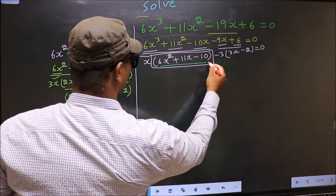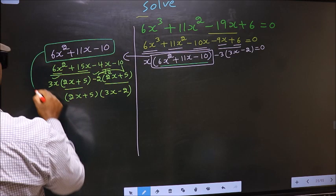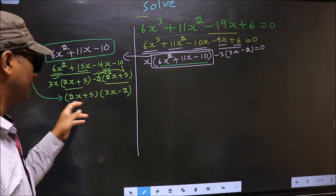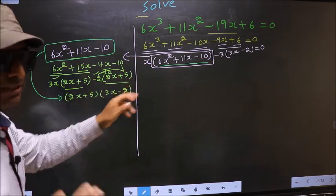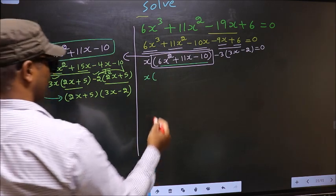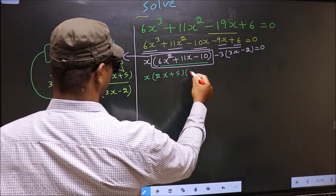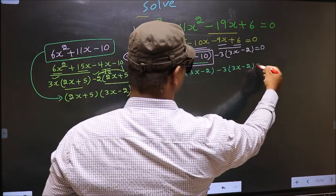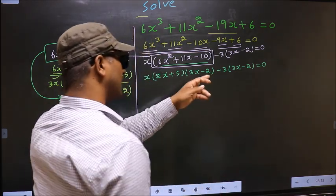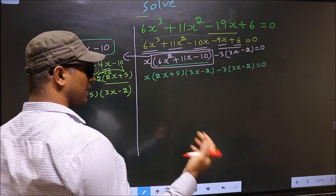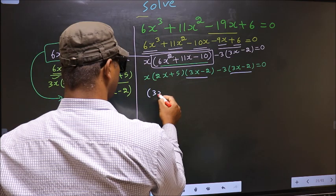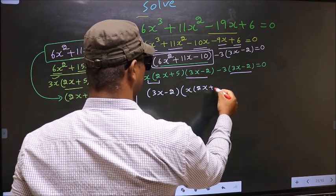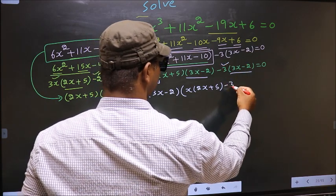In place of this quadratic, we write the factored form. So the equation changes to: x times 2x plus 5 times 3x minus 2, minus 3 times 3x minus 2, equal to 0. Now from this entire equation, what can be taken out common is 3x minus 2. So 3x minus 2 outside, and inside we are left with x times 2x plus 5 minus 3, equal to 0.